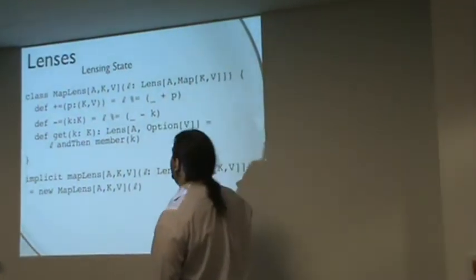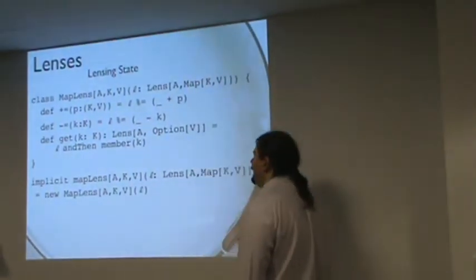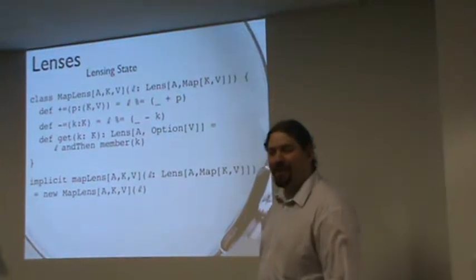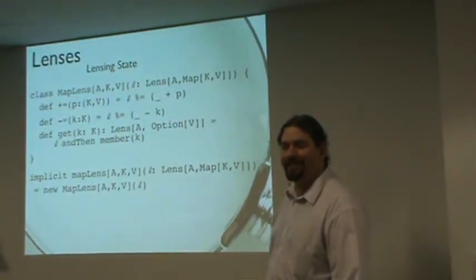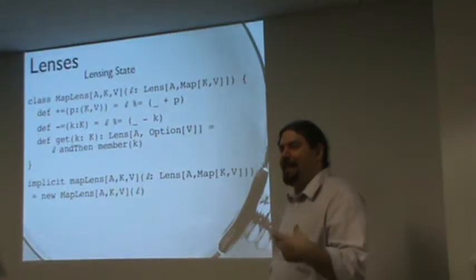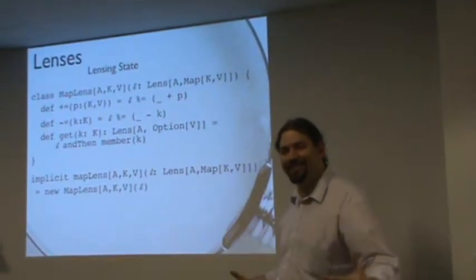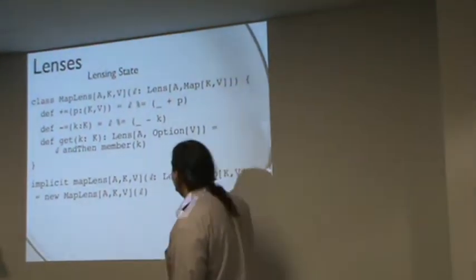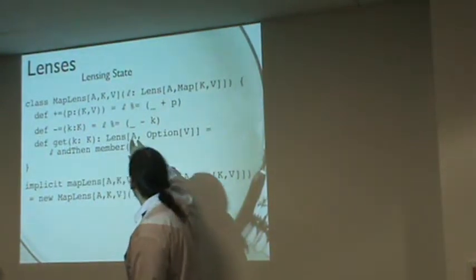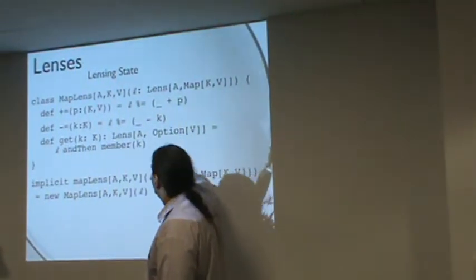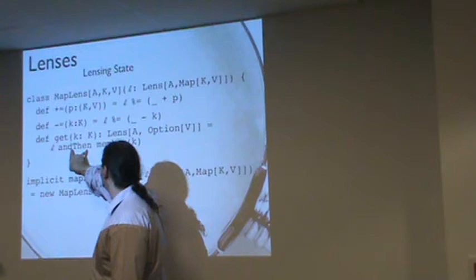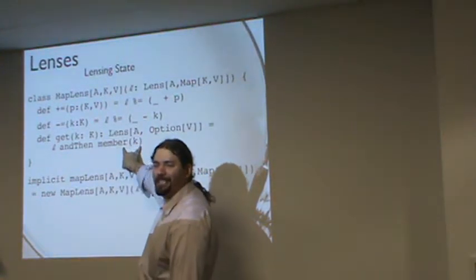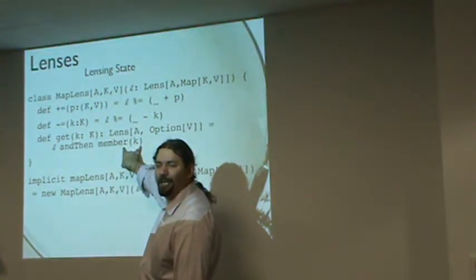And then we can actually give it a get method that looks kind of like the get from map itself. I'm now doing this on the lens, not on an actual object. Here what I'm doing is giving you a lens that will take an A down to an option of a value by looking at L and then composing that with the lens that knows how to get a given member out of it.